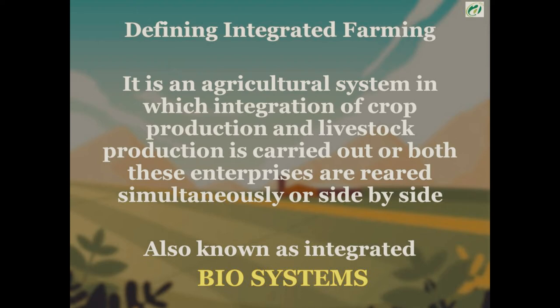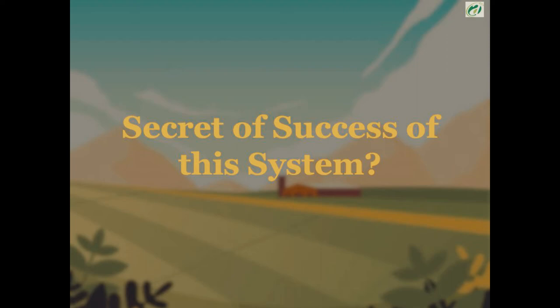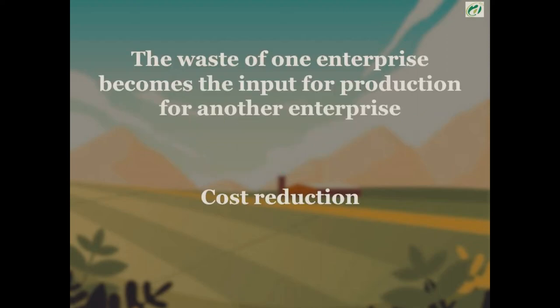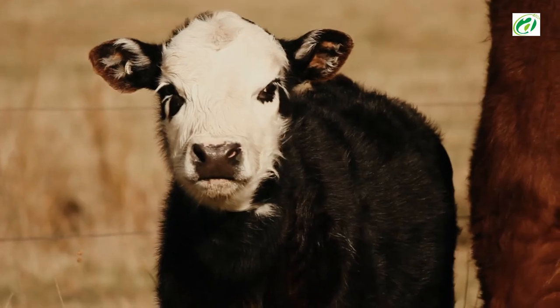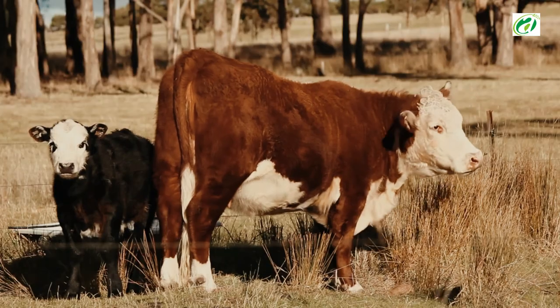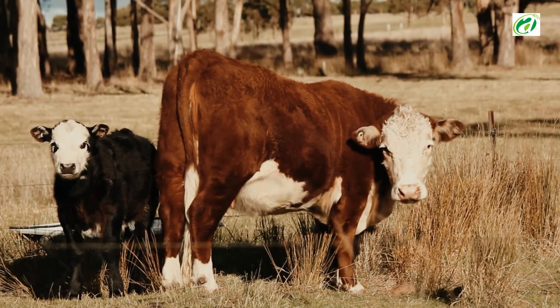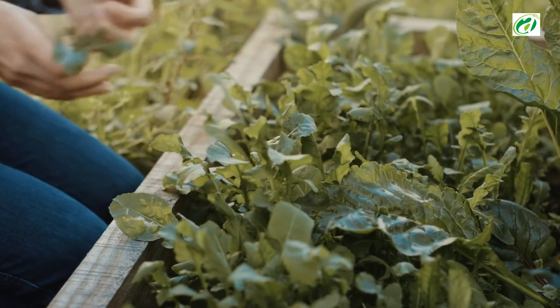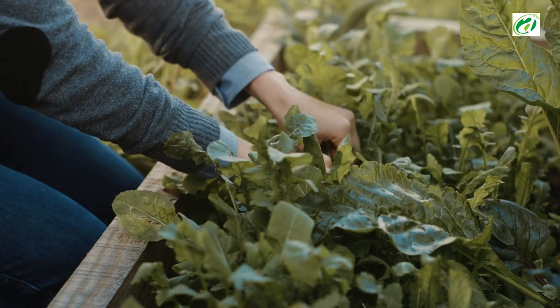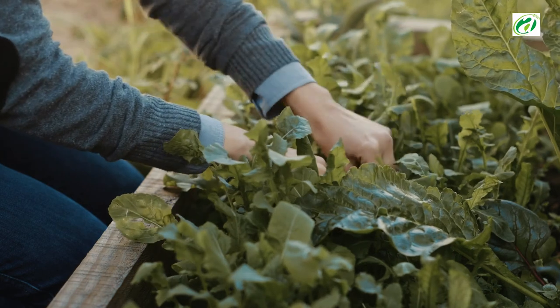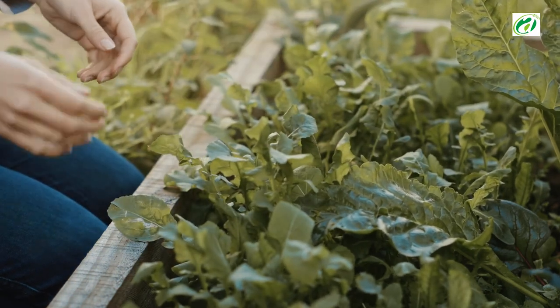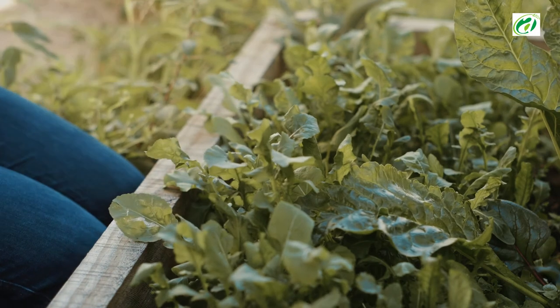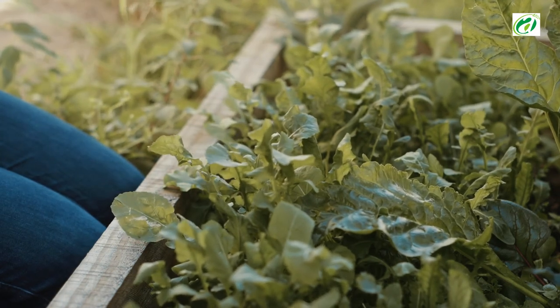The secret of success of this system is that the waste of one enterprise becomes the input for production of another enterprise — ultimately leading to cost reduction. For example, if you have livestock on your farm, you can use its manure, which is waste from the livestock, in the farm fields. This reduces the use of fertilizer and also reduces the cost of purchasing artificial fertilizer. The manure that was waste from the livestock system becomes an important input in the crop system as a fertilizer.